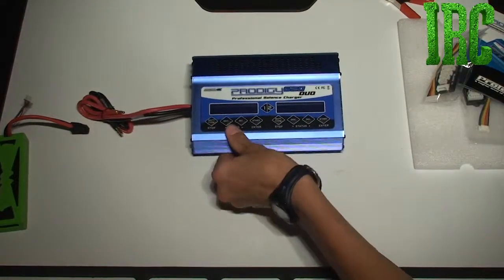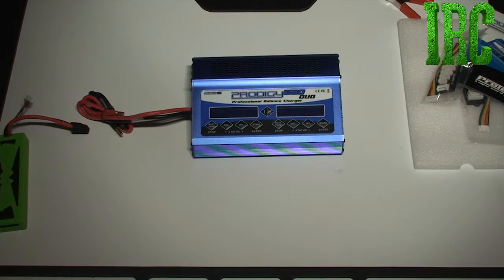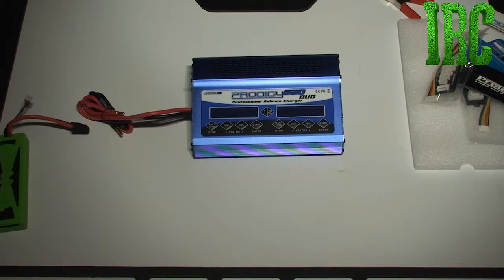So this charger - the input needs to be 12 to 18 volts. The charge current rate can be anywhere from 0.1 amps up to 20 amps per port. The discharge current is 0.1 to 5 amps, and the balance port drain is 300 milliamps per cell.